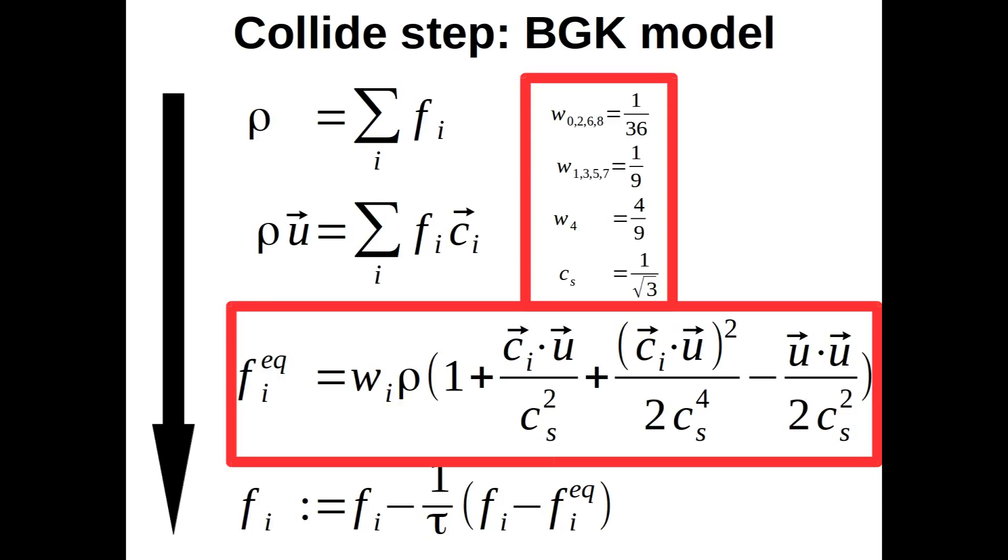The expression of the equilibrium function did not just fall from the sky. One can basically derive this expression from the Maxwell-Boltzmann distribution in the low velocity limit. That means for flow velocities U, which are much smaller than the speed of sound Cs.